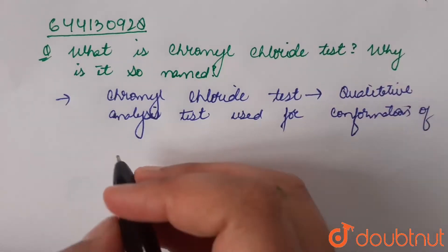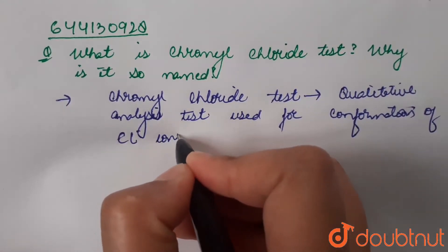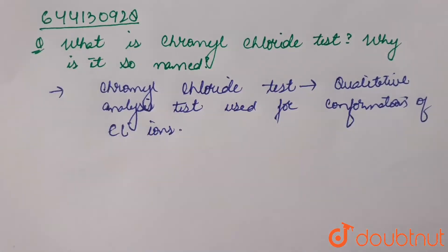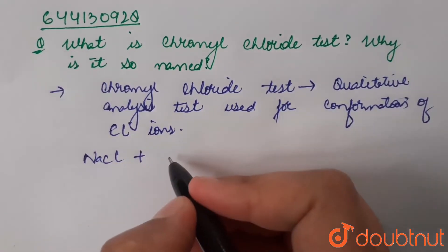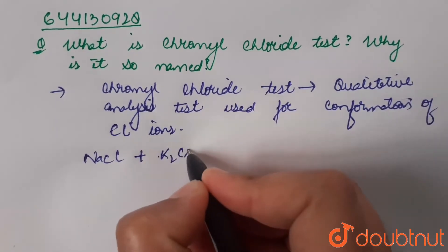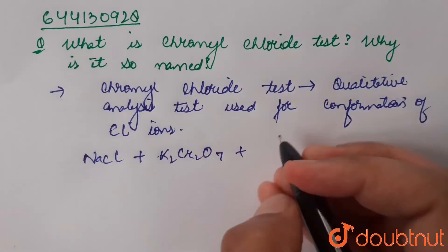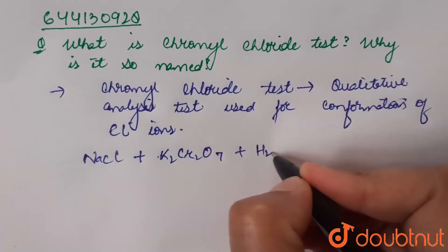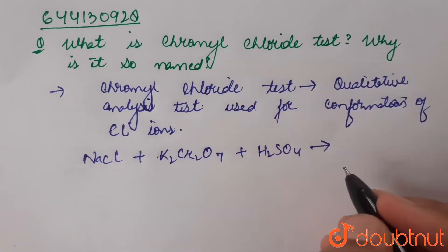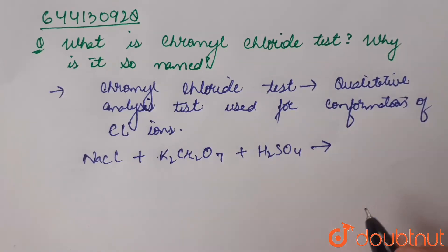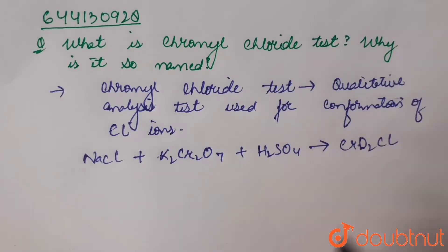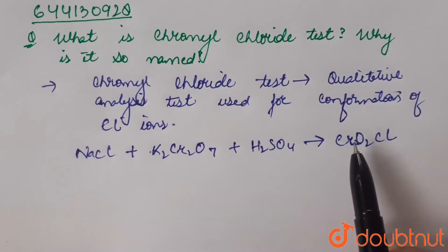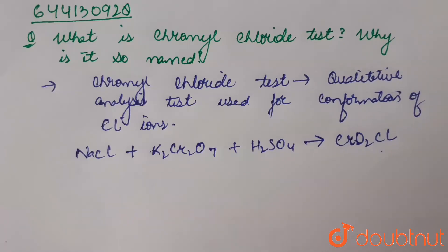For example, when a sample of a chlorine-containing salt — let that be any chloride — is heated with potassium dichromate K₂Cr₂O₇ and concentrated sulfuric acid H₂SO₄, it forms orange-red fumes of chromyl chloride CrO₂Cl₂. The formation of these orange-red fumes confirms the presence of chloride ions.